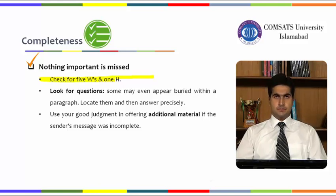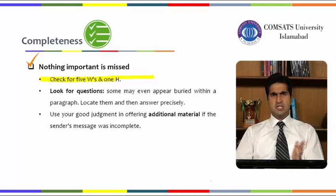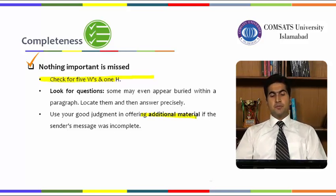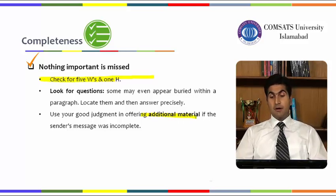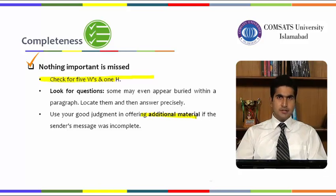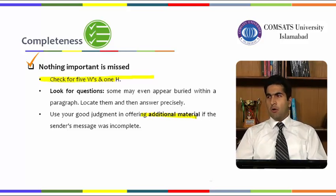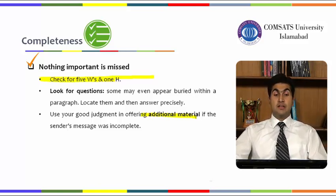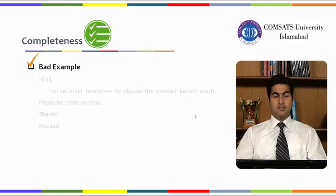If the sender's message was incomplete, you always have the space of providing additional material. This additional material could be in the form of an additional paragraph, or if you consider providing material that does not fit into the actual content but is still directly linked — something for the readers to look into in detail if they consider it necessary — then you provide it in the form of an appendix. These are the strategies to develop completeness within your writing.